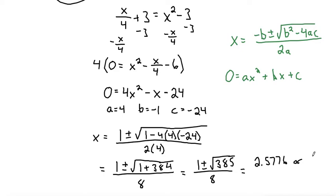The other option is 1 minus the square root of 385 divided by 8, and I get that to be negative 2.327.